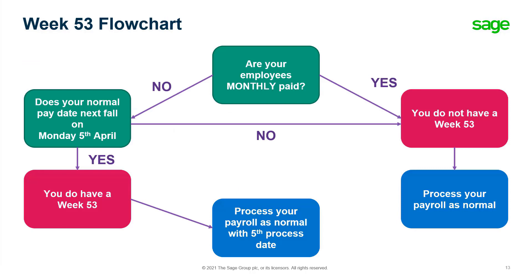To put this more simply: are your employees monthly paid? If yes, you do not have a week 53 and can process your payroll as normal. If your normal pay date falls on Monday the 5th of April, you do have a week 53 and should process your payroll as normal with a 5th process date.